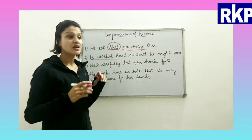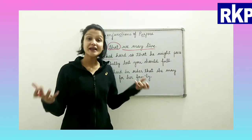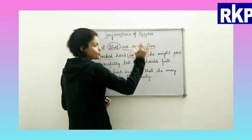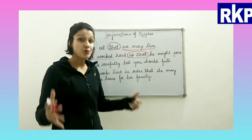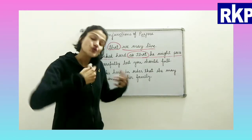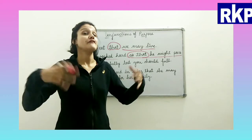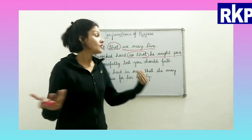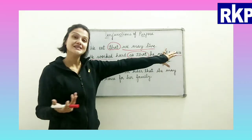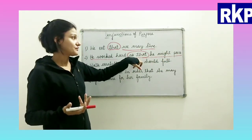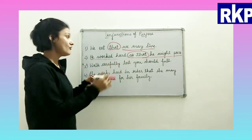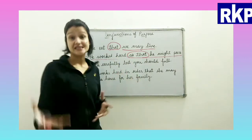'He worked hard so that he might pass.' 'He worked hard' is the independent clause. Why did he work hard? What was the purpose? 'So that' is the conjunction here — 'so that he might pass.' He doesn't want to fail, so that is the reason he worked hard. With the help of this conjunction, we get to know the purpose of the hard work that he did.